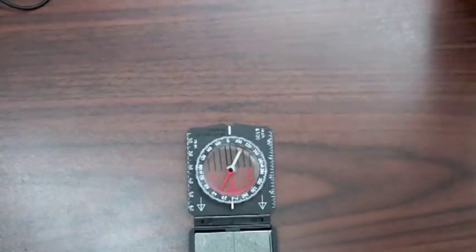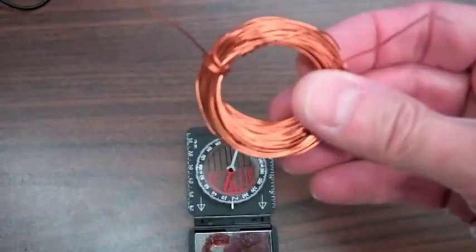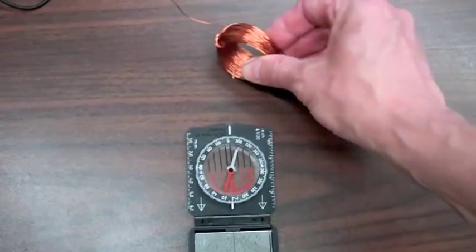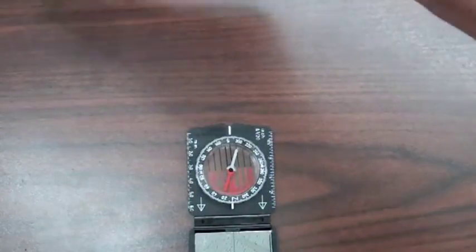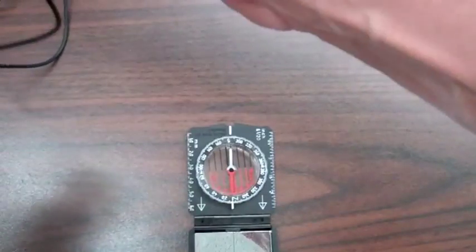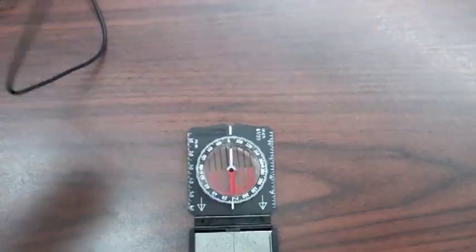Okay, now here we have a coil of wire and by itself the coil of wire has no influence on the compass. But now I'm going to take a battery and connect the battery to the coil so that we have a current flowing through the coil.